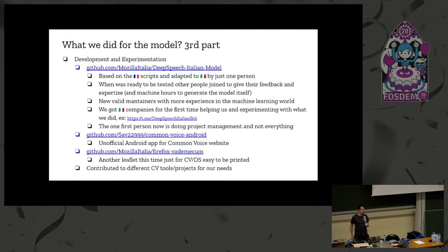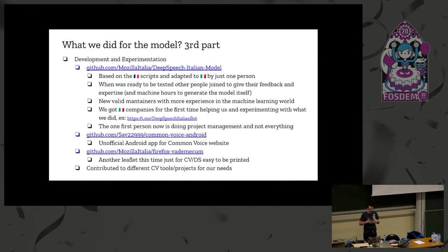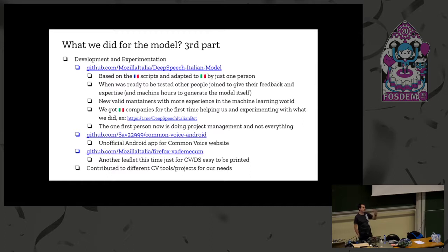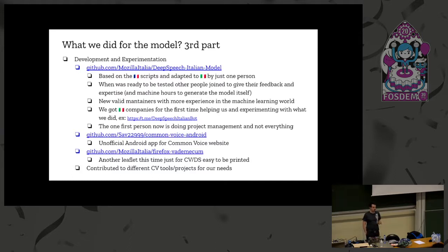After seven years inside the Mozilla community, for the first time we got companies contributing to our project — that was very important and exciting. We experimented with server support — the simplest example was a Telegram bot that compared recordings with both Google Speech and our model, which let us play with the results without installing DeepSpeech locally, since that isn't easy. I'm now mostly doing project management rather than the development itself. The key message is: getting a model isn't scary for someone without deep knowledge — you just need to start and ask, because the language-specific community is large. We also built an Android app for Common Voice because there wasn't one — it's a website — for different reasons.